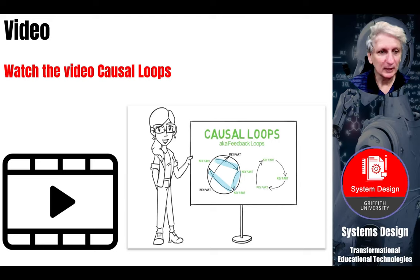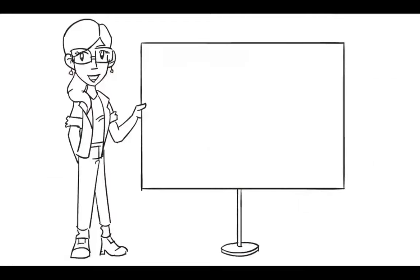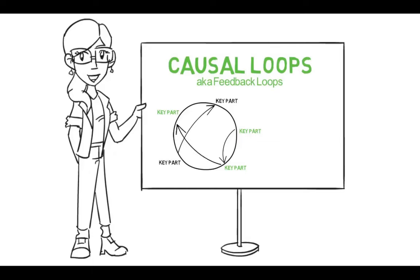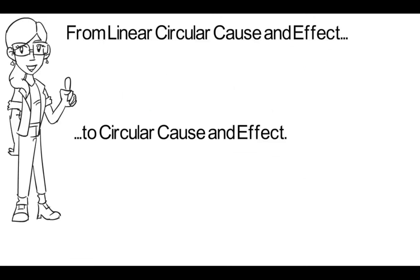Let's have a look at a causal loop. A causal loop, also known as a feedback loop, uses arrows to show how parts of a system affect one another. Using this tool helps move the focus away from linear cause and effect to seeing circular cause and effect. Often, cause-and-effect relationships are described in a simple linear fashion — a cause creates an effect and that's the end of the story.